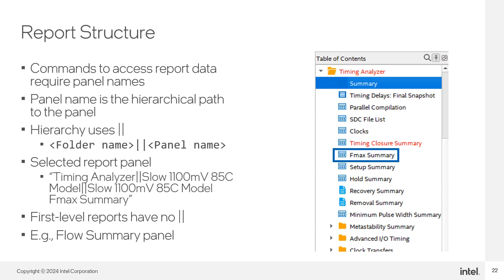As an example, the highlighted FMAX summary report panel has the full hierarchical name: Timing Analyzer||Slow 1100mV 85C Model||Slow 1100mV 85C Model Fmax Summary. First-level reports such as flow summary have no double pipes.